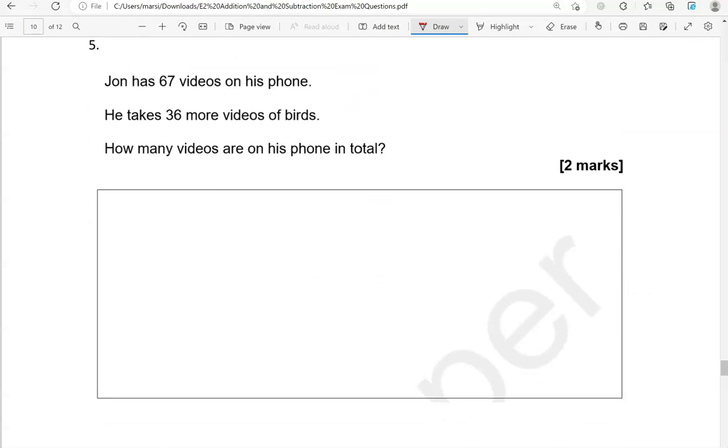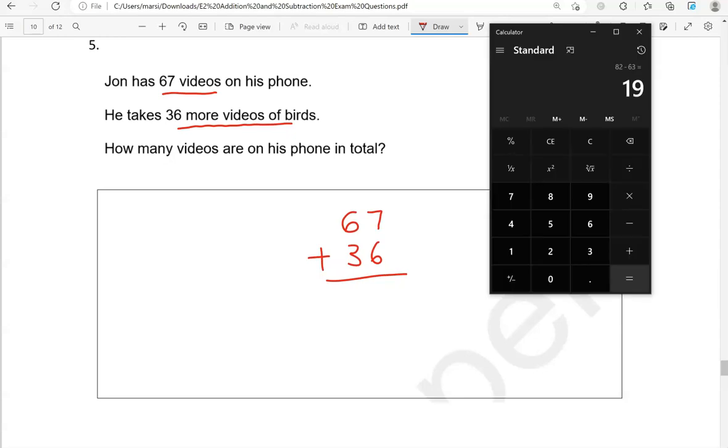John has 67 videos on his phone. He takes 36 more videos of birds. How many videos are on his phone in total? So 67 add the 36 should give us the total, which is 103.